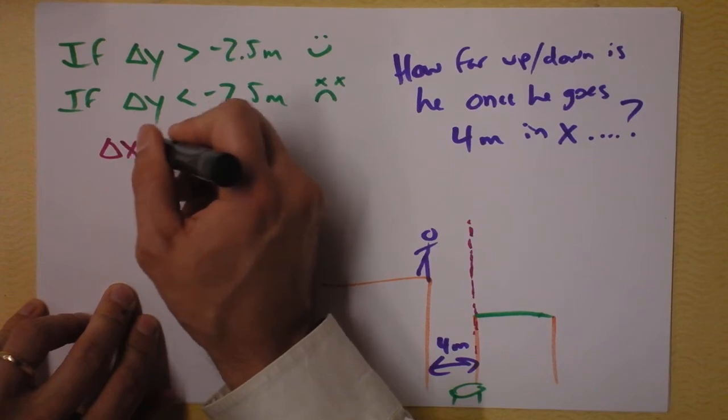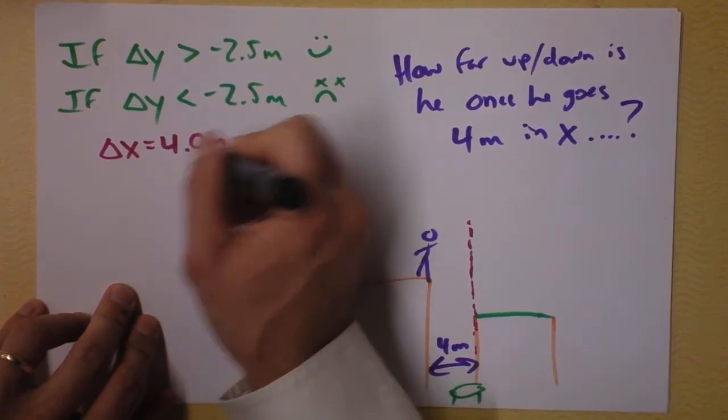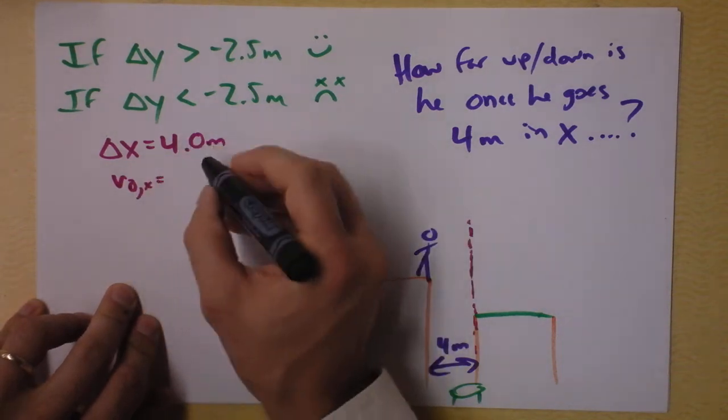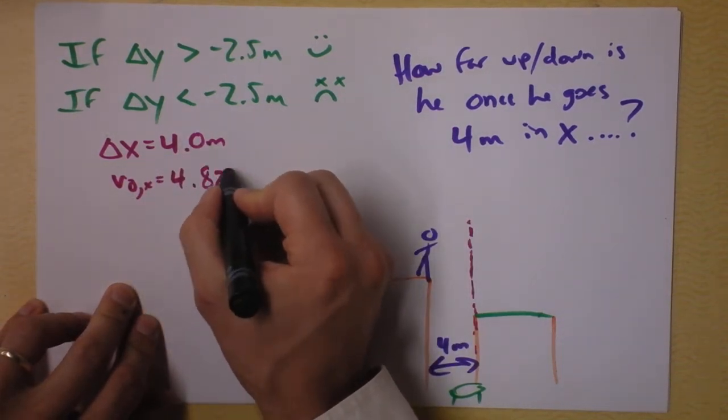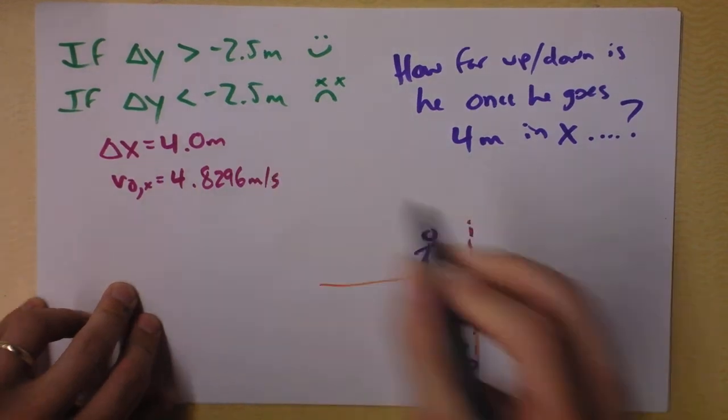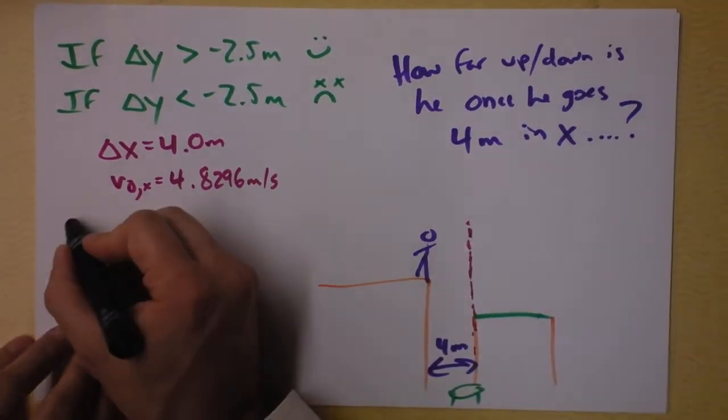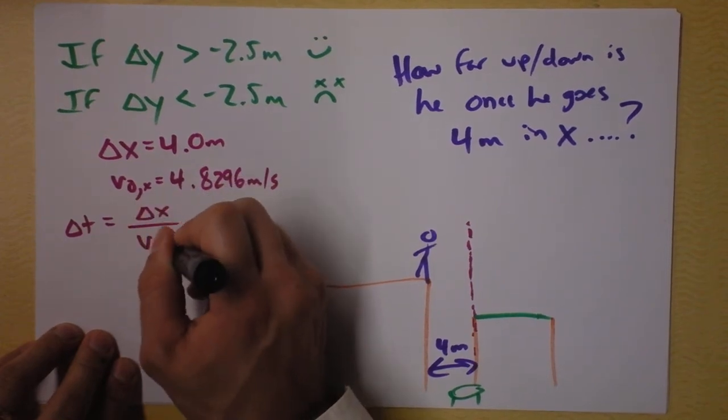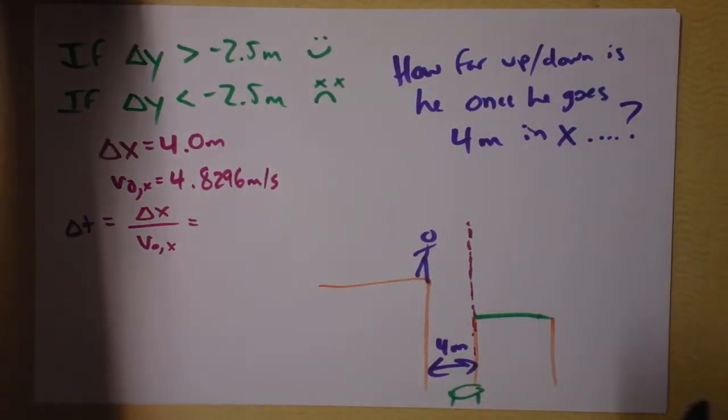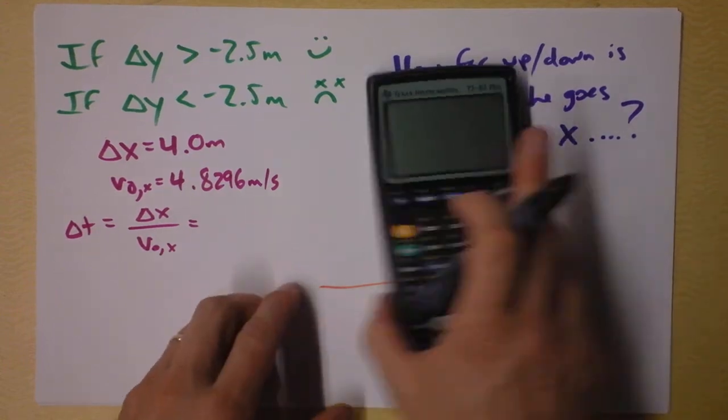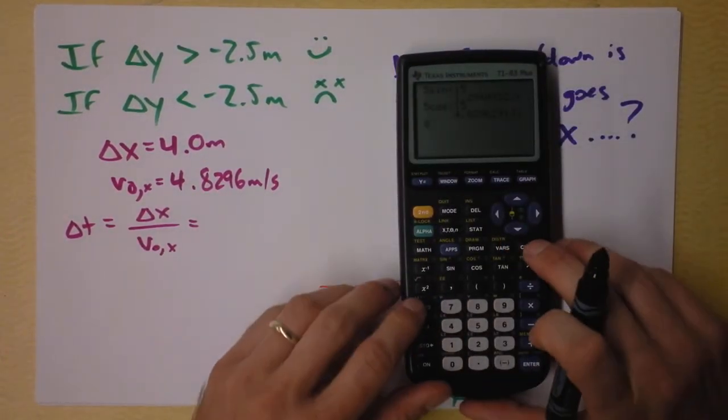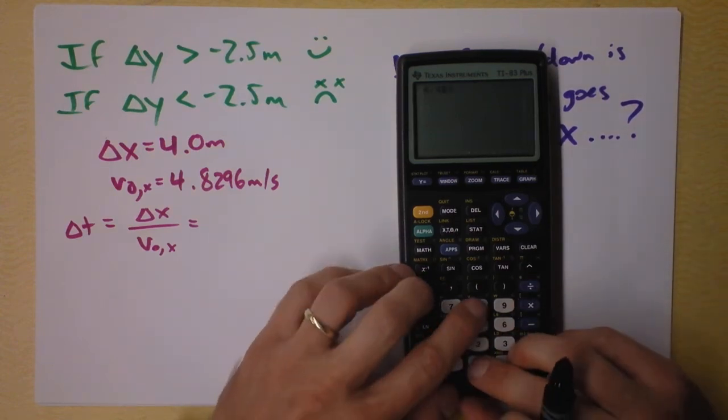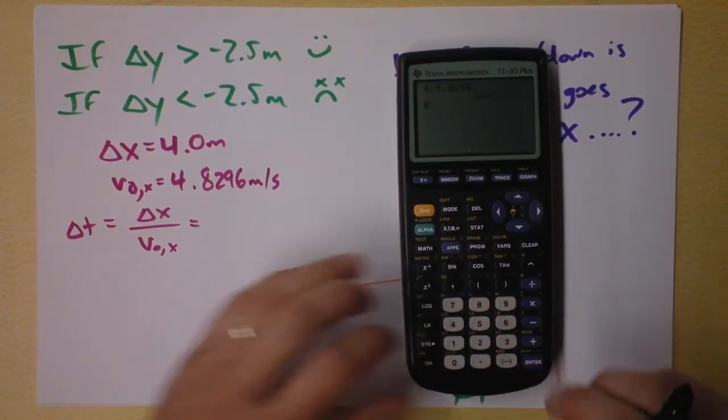In fact, I know delta x now is 4.0 meters, and I know the initial velocity in the x direction. That initial velocity in the x direction, if you don't recall, is 4.8296 meters per second. And I also am trying to find the time. So delta t is going to be delta x divided by the initial velocity in the x direction. So the time at which that happens, the time at which he gets to right here is very simple. It is just 4 divided by 4.8296. And I get a number.